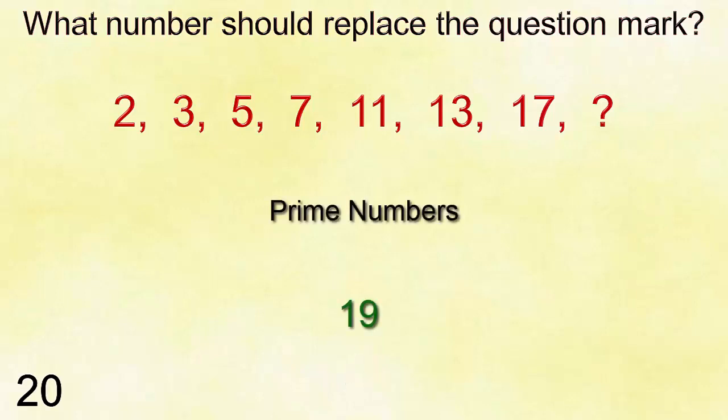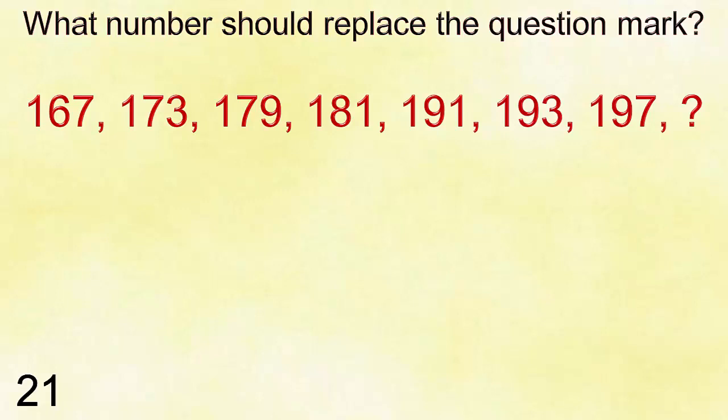Answer is nineteen. Number twenty-one: one hundred sixty-seven, one hundred seventy-three, one hundred seventy-nine, one hundred eighty-one, one hundred ninety-one, one hundred ninety-three, one hundred ninety-seven.